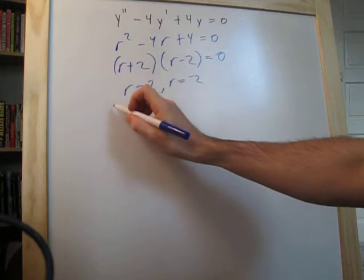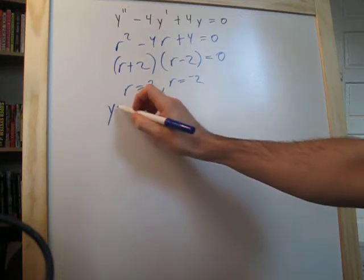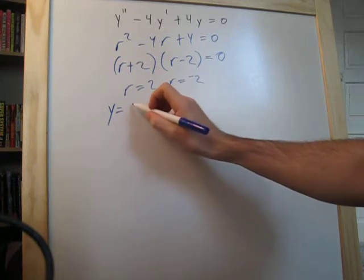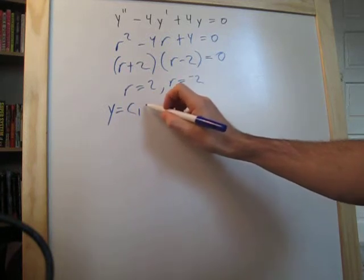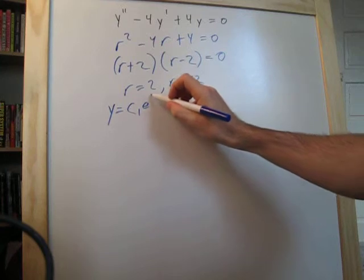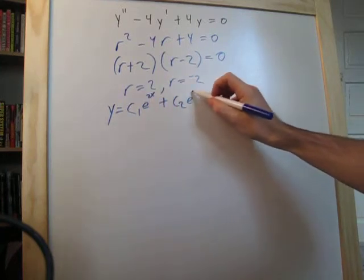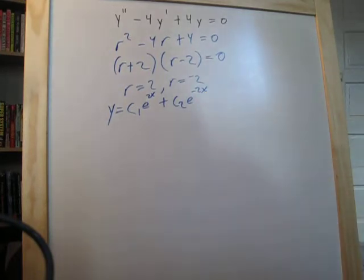Okay, and now we plug that into our general solution equation, and that gives us C1 times e to the 2x plus C2 e to the negative 2x, and we're done.